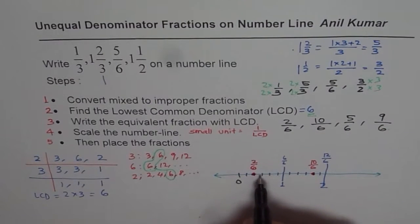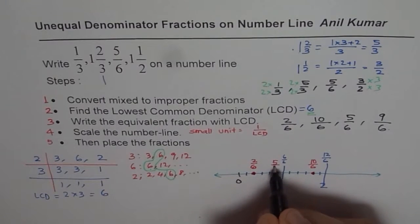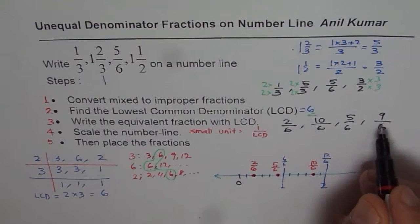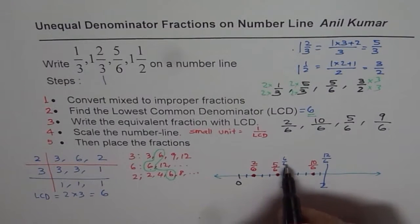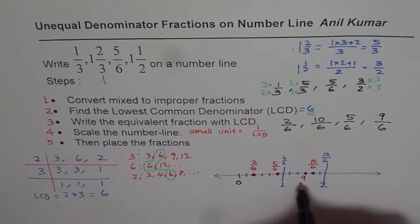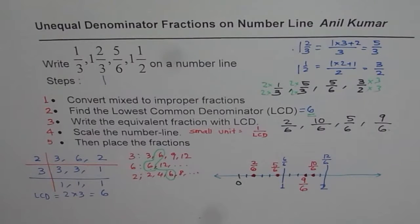5 over 6: 1, 2, 3, 4, 5. 5 over 6 is this one. 5 over 6 is 1 sixth less than 1. 9 over 6. So 9 over 6, this is 6 over 6: 7, 8, 9. So that is 9 over 6. So that is how you can place all these fractions. I hope that is absolutely clear.